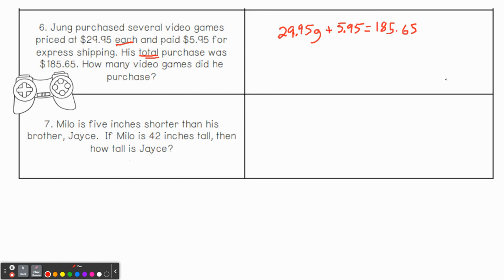Last one. Milo's five inches shorter than his brother Jace. If Milo's 42 inches tall, how tall is Jace? Milo is 42 inches tall. Jace is five inches shorter. So if Jace is five inches shorter, we're going to take away five from Jace. So let's do J for Jace. So J minus five equals 42. This one's a little bit simpler, a one-step equation here. So not as hard as you might've thought.